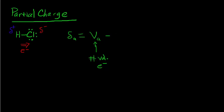Then we're going to subtract from that N sub A, which is the number of non-bonding electrons. So we're going to count those lone pair electrons and add them all up. Then we're going to subtract from that the number of bonding electrons, BA.